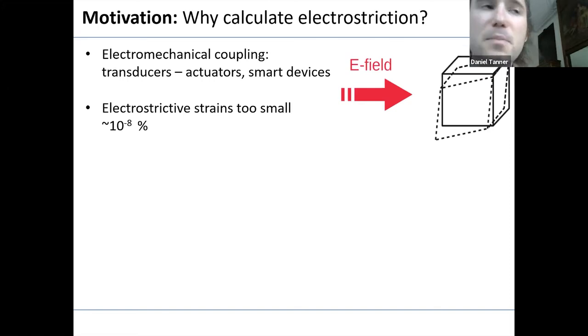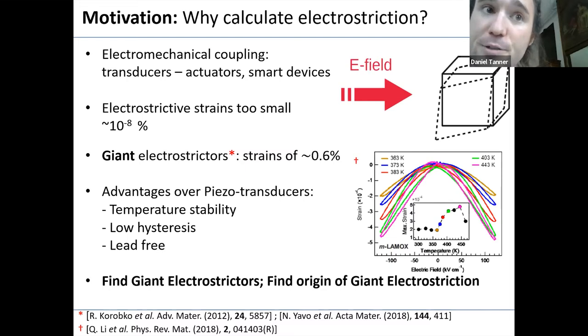So as an electromechanical coupling, electrostriction is going to have a lot of applications in transducers, actuators, smart devices. But for a long time, electrostrictive strains were too small for this purpose. So electrostrictive materials were ignored in favor of piezoelectric materials. But that was until giant electrostrictors were found, which have more usable strains for applications. And these have advantages over piezoelectric transducers of generally, they've got better temperature stability, lower hysteresis, and they don't need to be lead-based materials. So this is Lamox, which is considered a giant electrostrictor and it has many of these properties. So this has motivated people to want to find more giant electrostrictors and also to explain why giant electrostrictors are giant. People don't fully know that yet.